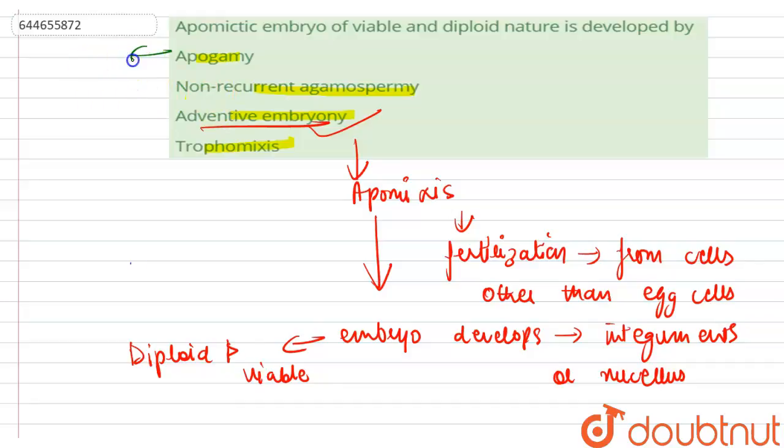Apogamy is the development of embryo without fertilization, without fusion. In ferns, sporophytes form from the gametophyte without fertilization. Apogamy cells are gametophytic cells. They are haploid. So this is the incorrect option.